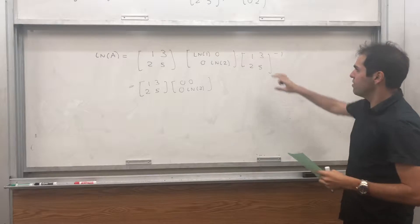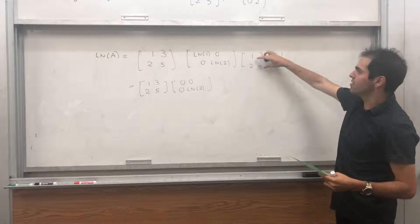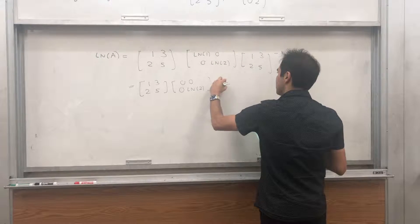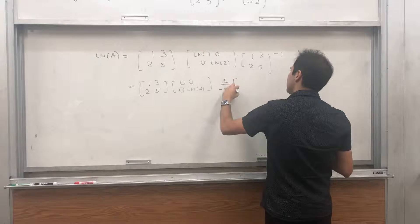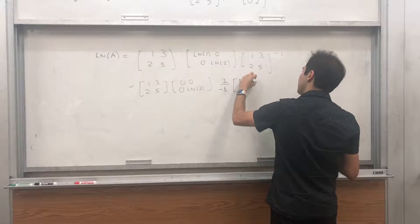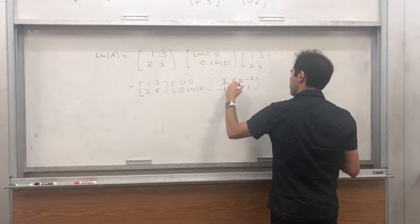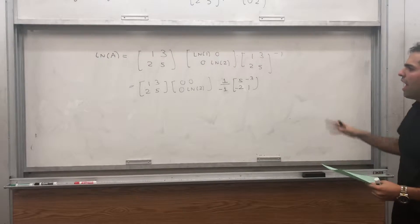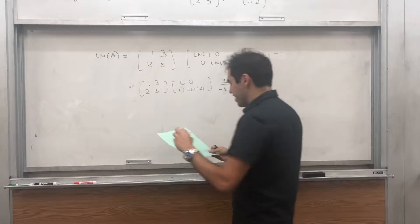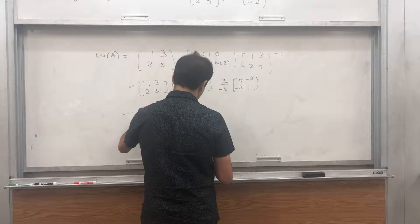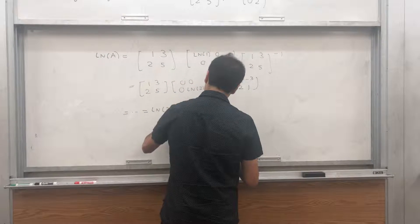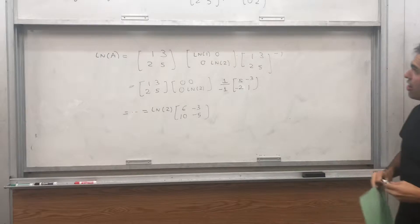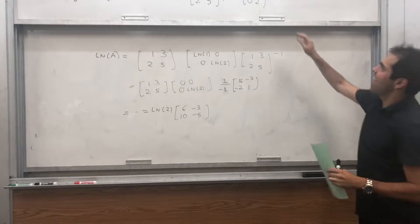And, remember, to find the inverse of a 2 by 2 matrix, you take 1 over the determinant, so 5 minus 6, which is minus 1. So, 1 over minus 1. And, you flip the thing, so 5, 1, minus 3, minus 2. And, then, you calculate this, and, in the end, what you get is ln of 2 times 6, 10, minus 3, minus 5. Now, that's already good, so we calculated ln of A.